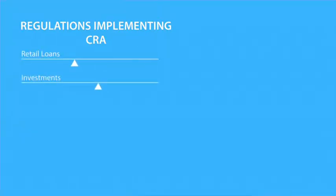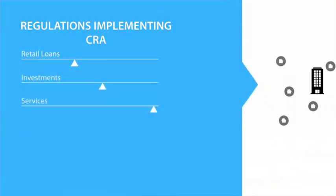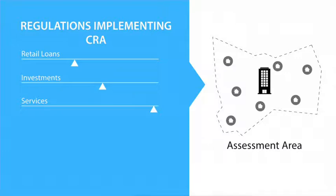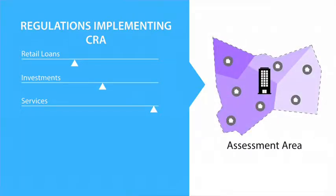The regulations implementing CRA are designed to evaluate a bank's retail loans, investments, and services to determine if they have been offered in neighborhoods with different income levels throughout its assessment area. An assessment area is where a bank reasonably believes it can serve its marketplace based on the location of its main office, branches, and deposit-taking ATMs. For larger banks, the CRA also evaluates a bank's community development lending, investments, and services.